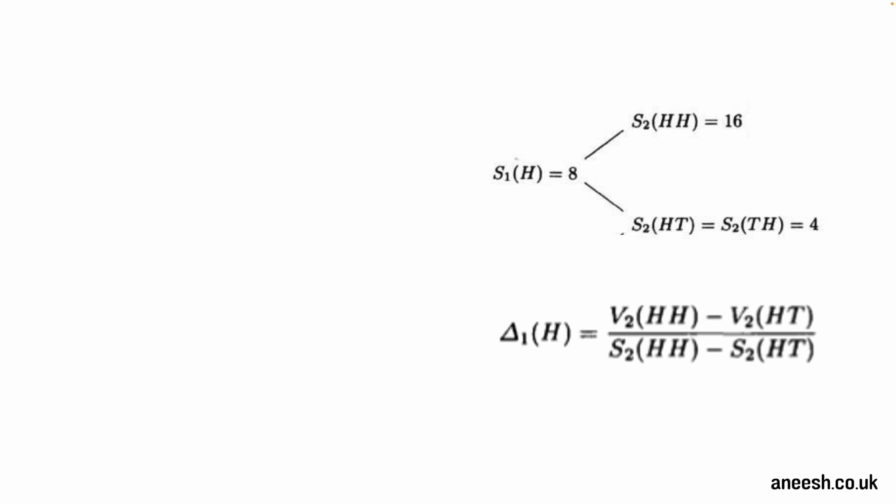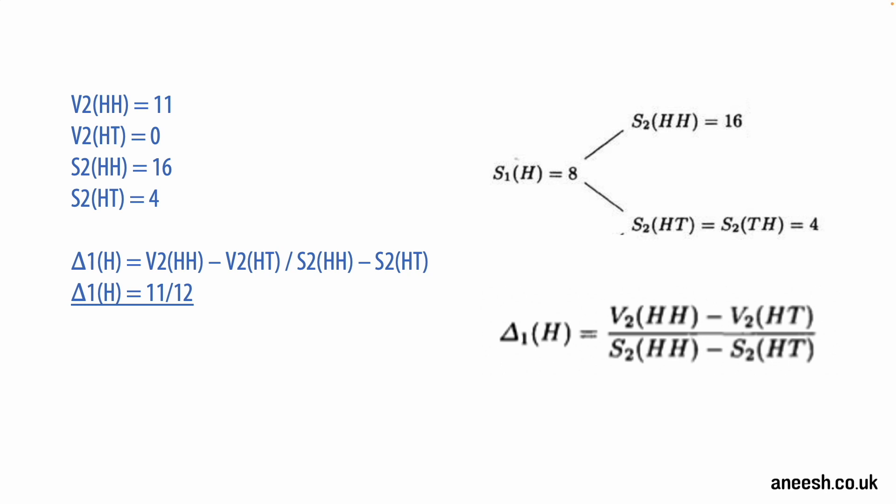So let's revisit our delta hedging formula from the previous video. With a strike of 5 we know that V2(HH) is 11, V2(HT) is 0, S2(HH) is 16 and S2(HT) is 4. And this leaves a delta hedge of 11 over 12 that is required. We now know that at time 1(H) we must hold 11 over 12 delta to hedge our position.